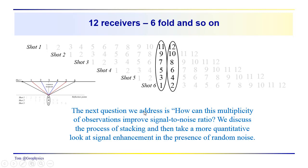Now the next question that we want to address is how can this multiplicity of observations improve the signal-to-noise ratio? So we'll talk about that. And then we'll discuss the process of stacking, which is really just summing all these records together. We have to NMO correct them, of course, before we can do that. And then in another video we'll take a more quantitative look at the attenuation of random noise. So thanks again for joining us and hope to see you next time.